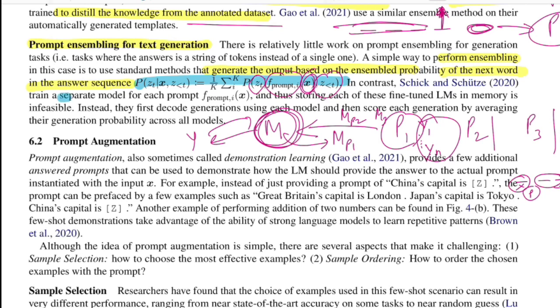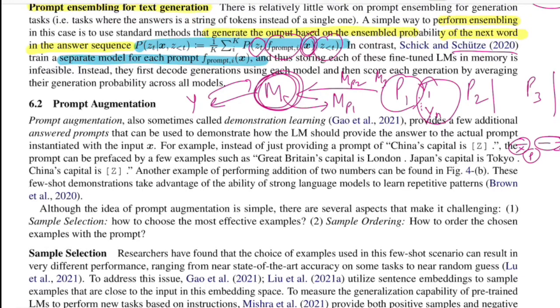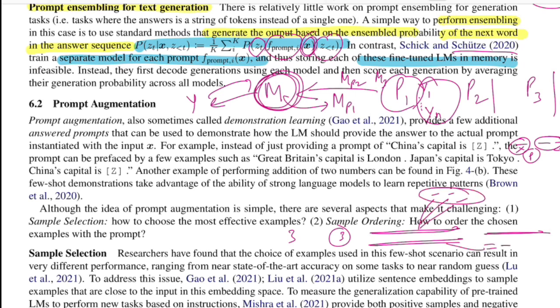Another approach fine-tunes a separate language model for each prompt — if there are three prompts, you get three models. Since storing all models in memory is infeasible due to their size, you instead use each model to decode a sequence offline, giving three candidate sequences z. You then calculate the likelihood of every sequence using each model, average these likelihoods, and select whichever sequence scores highest as the final generated output.